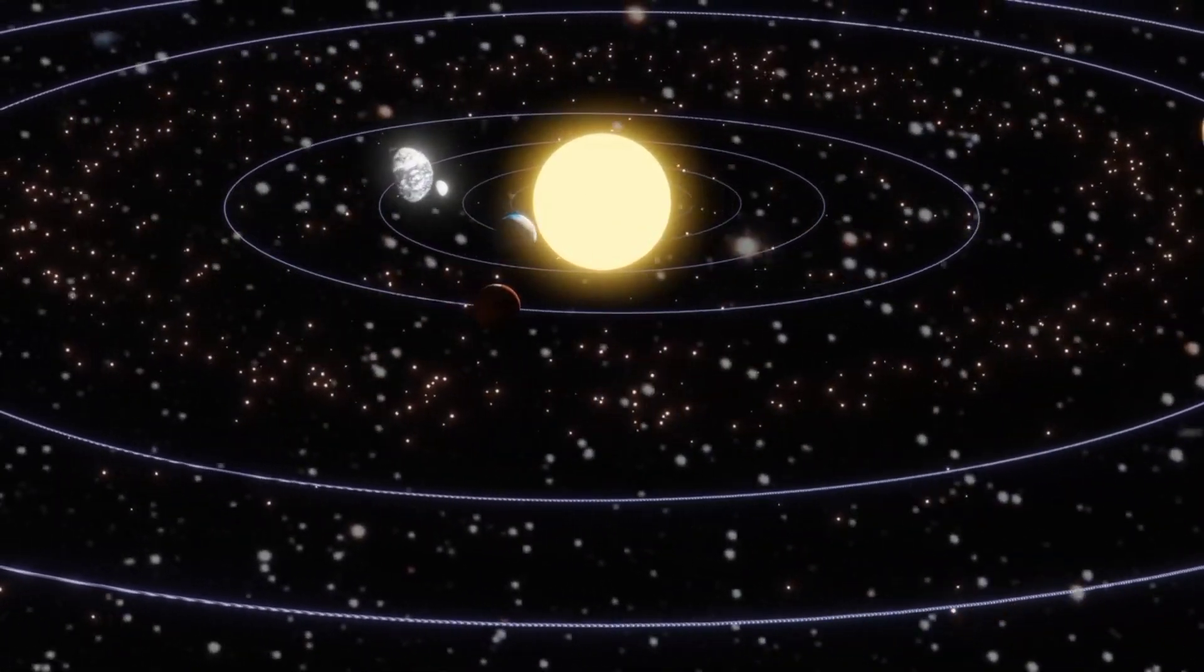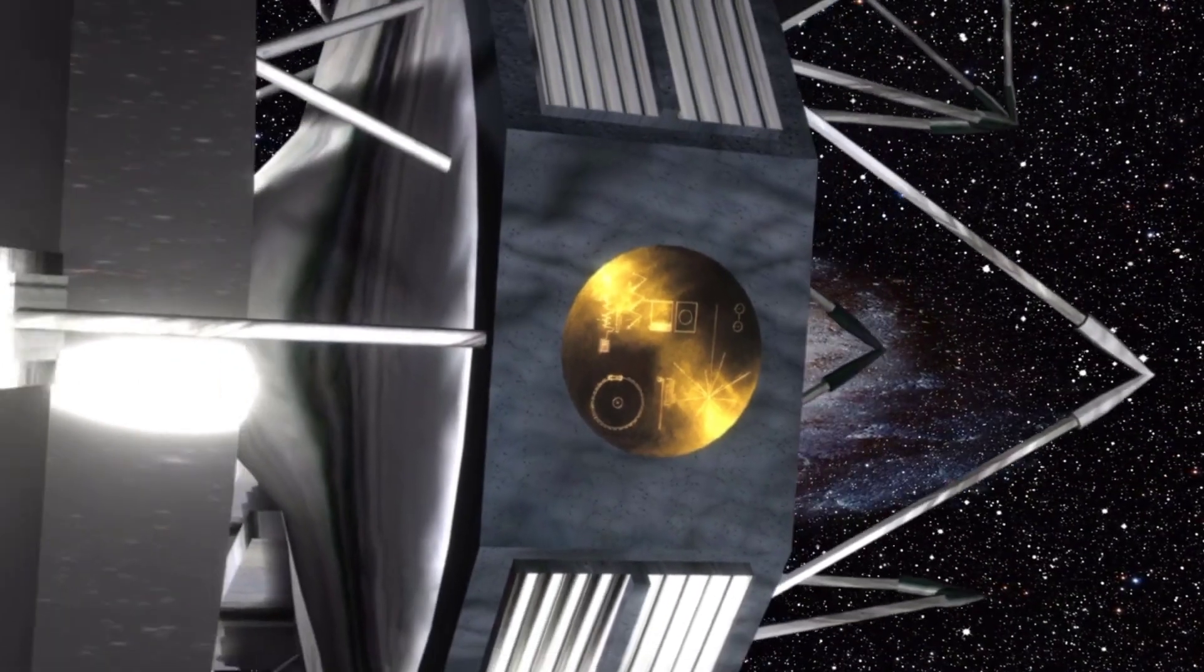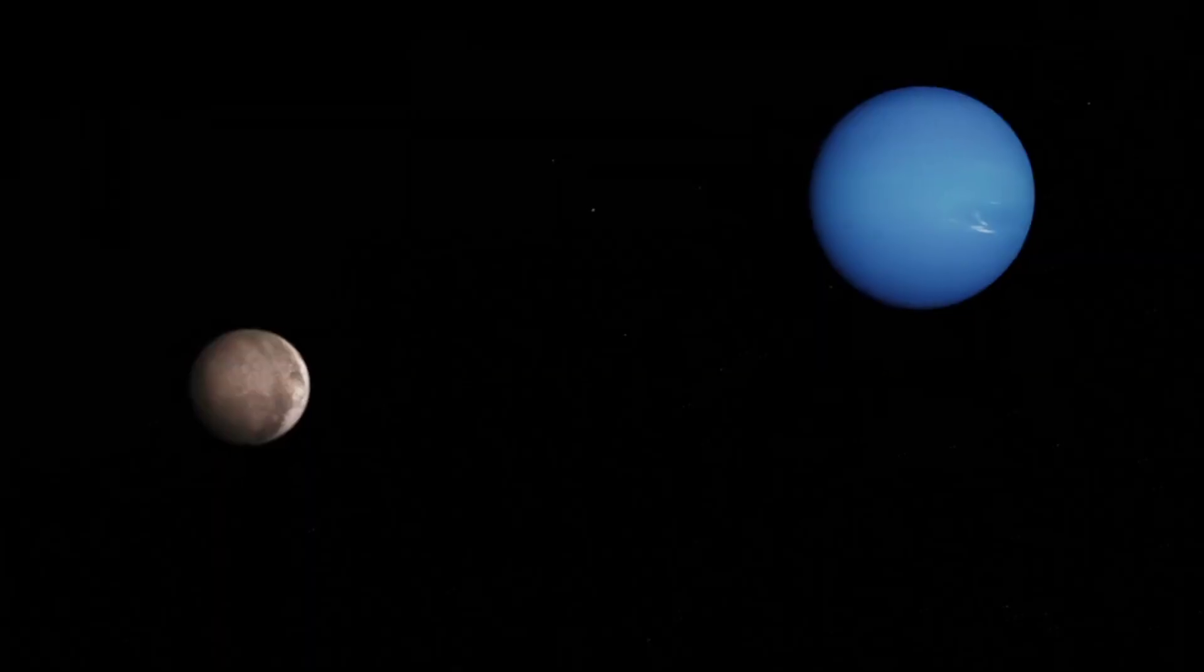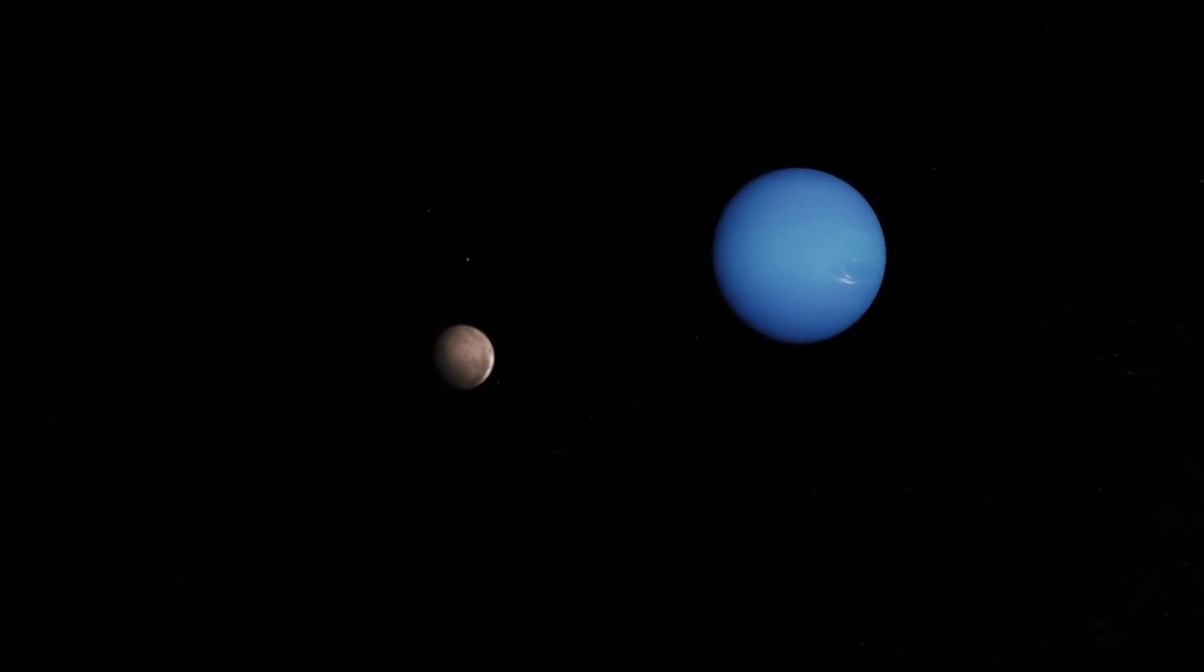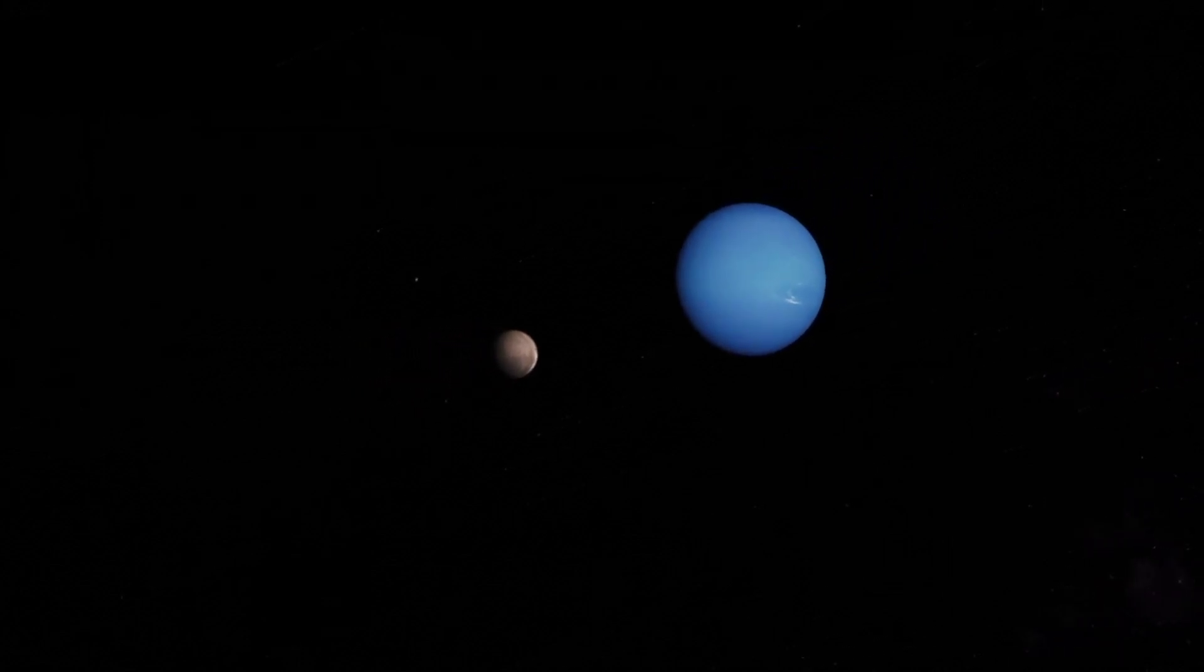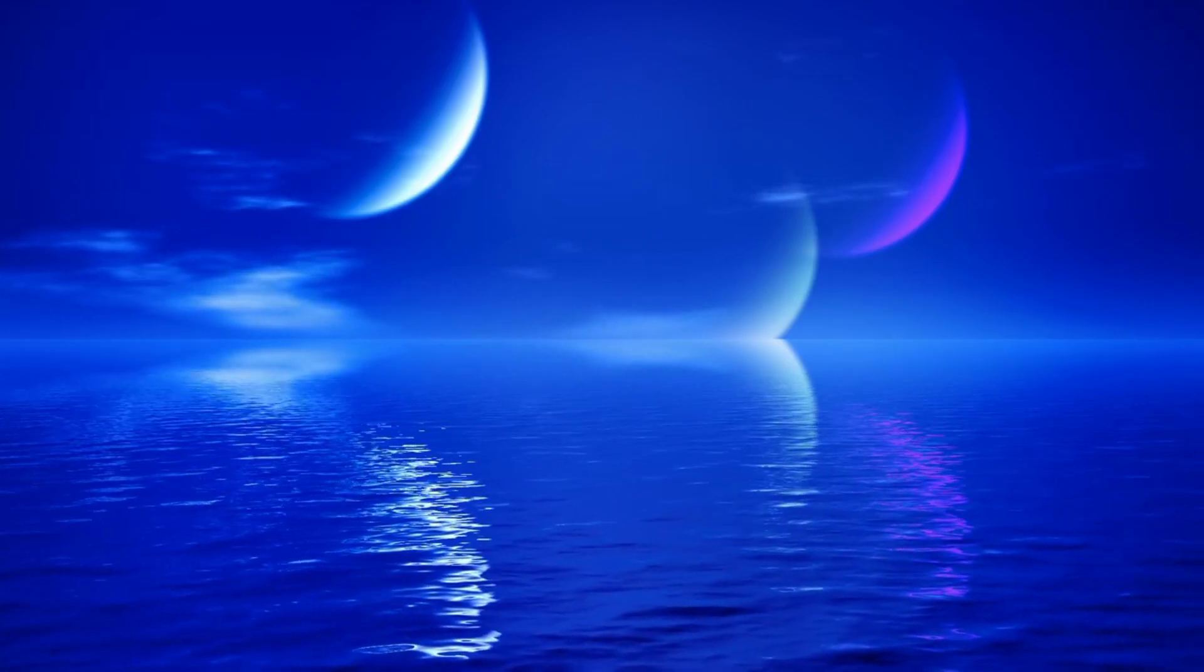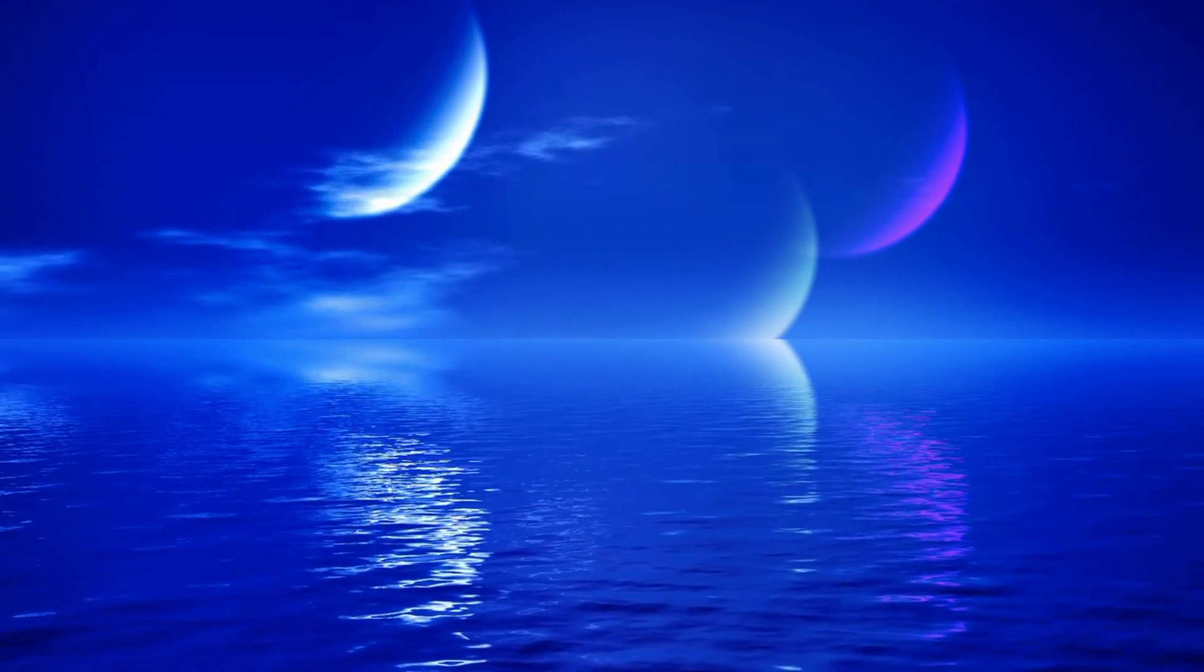To learn more about what Uranus and Neptune are made of, astronomers have devised models that match the physical properties that Voyager 2 and Earth-based telescopes have measured. Many models assume the planets have a thin hydrogen and helium envelope, an underlying layer of compressed, superionic water and ammonia, and a central rocky core. Some estimates suggest Uranus and Neptune may each have 50,000 times the quantity of water in Earth's oceans.